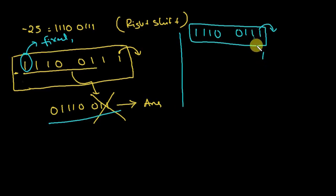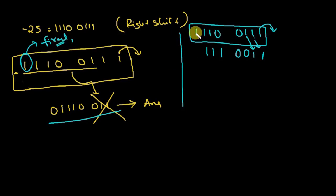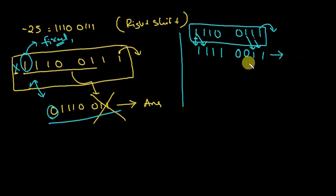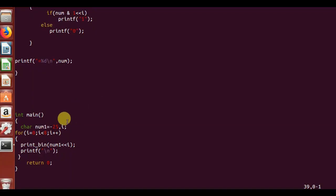In right-shifting negative numbers, the MSB (most significant bit) is preserved — or you can say fixed. While shifting, it copies its value rather than vacating the position. So instead of a 0 filling the MSB, a 1 is placed there. We'll verify this with a program and draw conclusions.